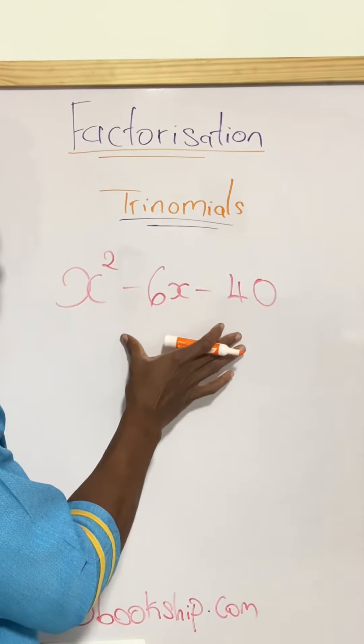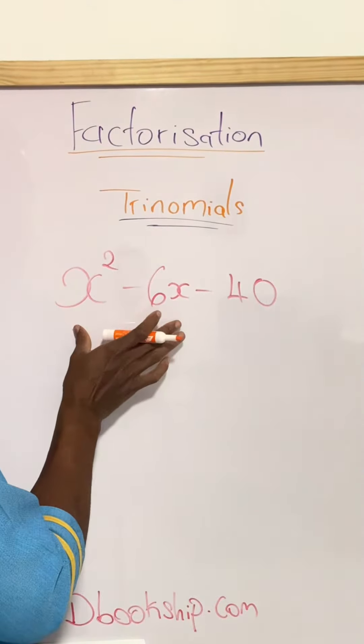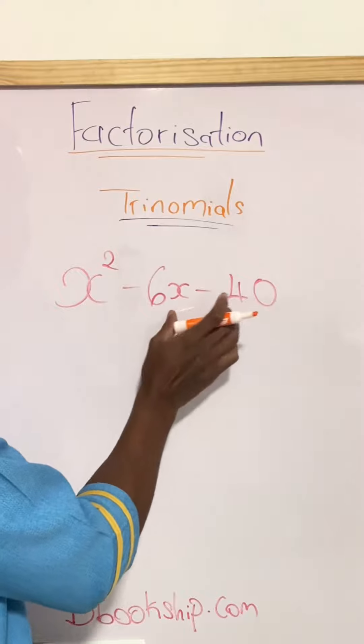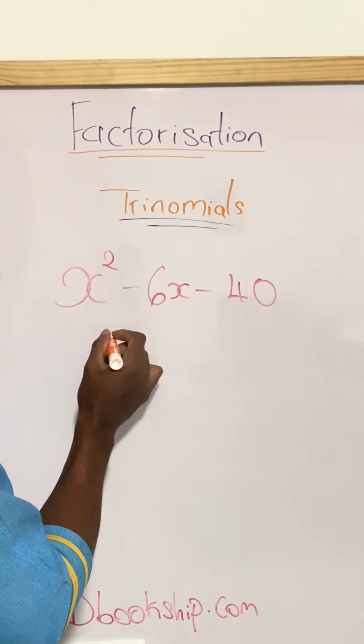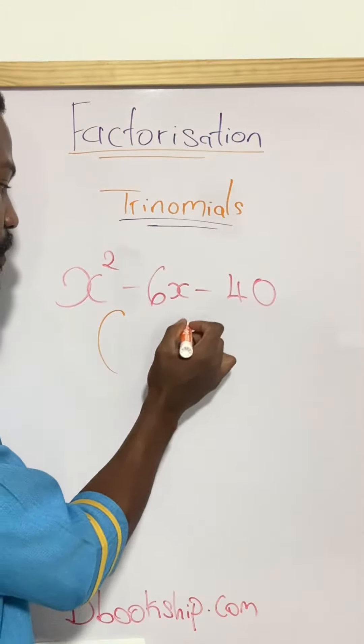When you are given three terms where you are finding x squared, 6x, and 40, we're going to factorize them. The first thing that we do is to have double brackets.